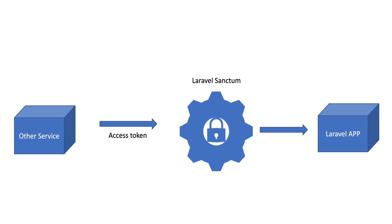If you're authenticating another service with your API where the user is not entering a username and password, then you manually generate the access token for a specific user and use that token to authenticate with your app. These tokens can either be manually created or through some kind of admin panel where your users are able to generate tokens for themselves.